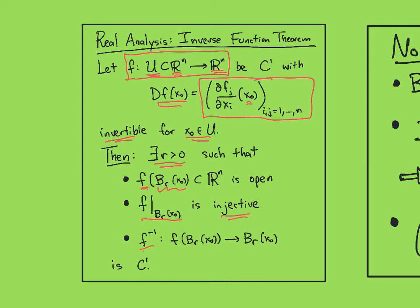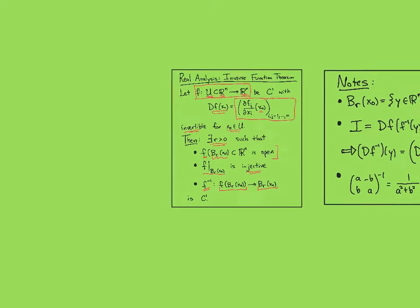And the associated inverse function, which would then map from f of that ball to the ball, is actually C1. So the inverse function being C1 is the main content of this, and a big part of it is actually proving that it maps this open set to an open set. This is one standard way of formulating the inverse function theorem in real analysis.